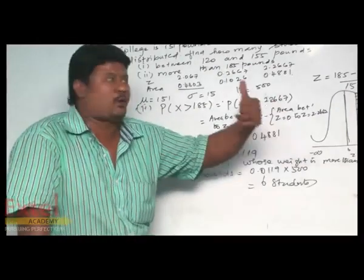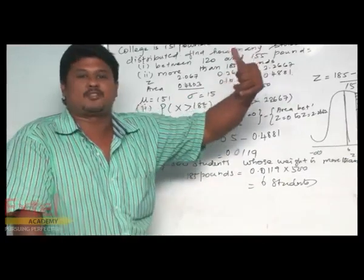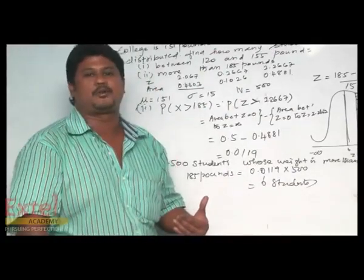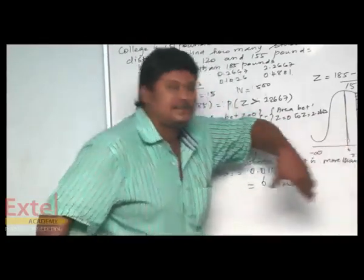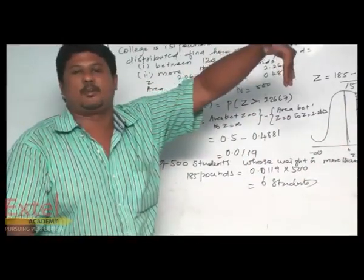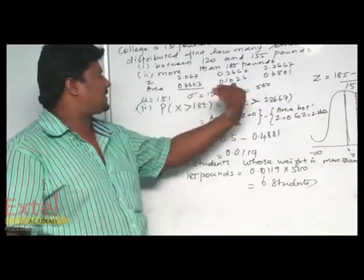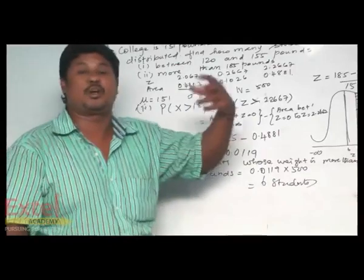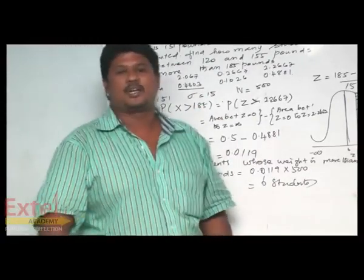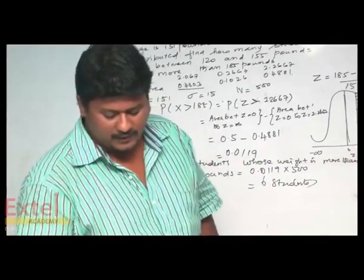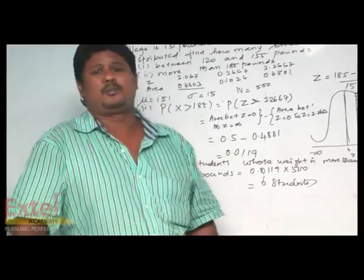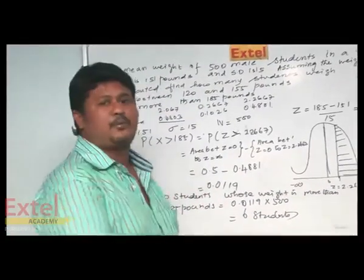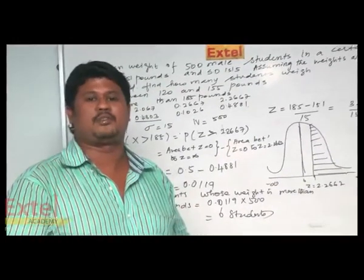In summary: we found the area from z equals 0 to 2.067 plus area from z equals 0 to 0.2667 for the first part. In the second part, where z is greater than 2.2667, we subtract the area from 0 to 2.2667 from 0.5, giving the number of students whose weight is more than 185 pounds as 6 students. This is all about the second problem in normal distribution. Now we are going to discuss the next problem in Poisson distribution, which is also an important 10 marks question.